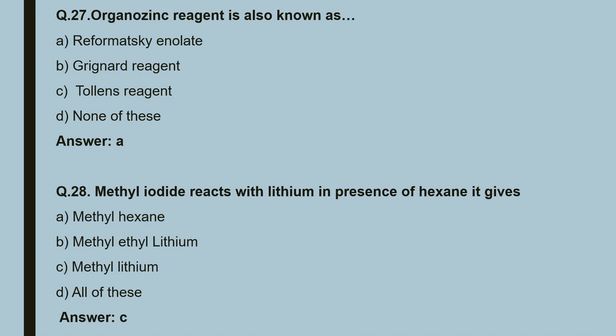Question 28: methyl iodide reacts with lithium in presence of hexane — it gives methyl lithium. So the correct answer is C.